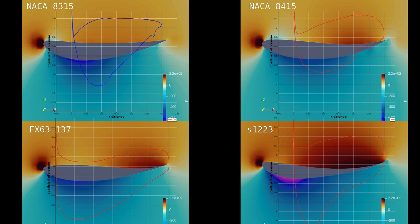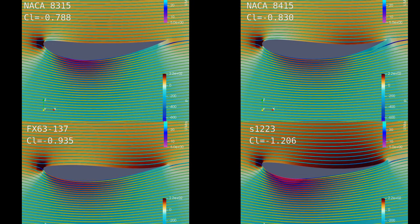The Wortmann FX 63137 and the Selig S1223 use equations and methods that are intended to give specific characteristics to the wing, in this case high lift. That is, the thickness gives the lift coefficients and efficiency ratios that are far superior to the NACA profiles. Now if you look at the plot of pressure coefficients along the profile, there is more lift created earlier.